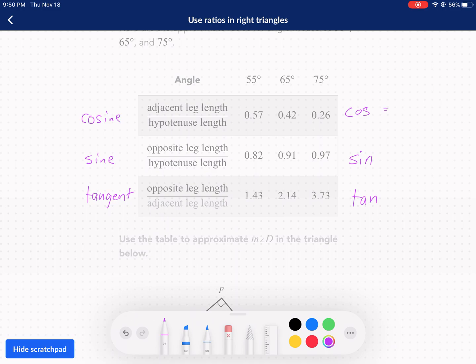One way to remember it is SOH-CAH-TOA. You may have remembered that - I would check out some of those trigonometry videos I have. But this is an understanding that you know the trigonometric ratios: adjacent over hypotenuse, opposite over hypotenuse, and opposite over adjacent.